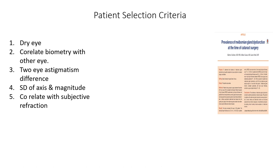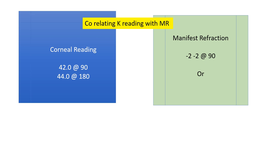Also assess the standard deviation of axis and magnitude from your keratometer readings. With a standard autokeratometer, look at the 10 individual readings in the background — the standard deviation of the axis should be less than 3.5 degrees as per Brent Hill, and the standard deviation of magnitude should be less than 0.25 diopters. Always correlate with the patient's subjective refraction. It is seldom that a patient has with-the-rule astigmatism in one eye and against-the-rule in the other — if this occurs, recheck.